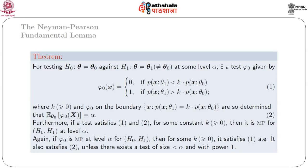Furthermore, if a test satisfies condition (1) — the form of phi_0(x) — and condition (2) — E_{theta_0}[phi_0(x)] = alpha — then k and the boundary value are so determined that the test is of size alpha. Again, if phi_0 is most powerful at level alpha for H_0 against H_1, then for some k >= 0 it satisfies (1) almost everywhere, and it also satisfies (2) unless there exists a test for some psi < alpha with power 1.